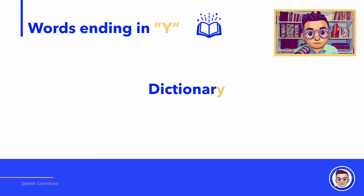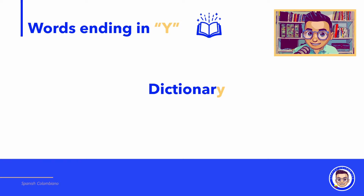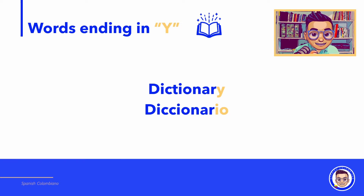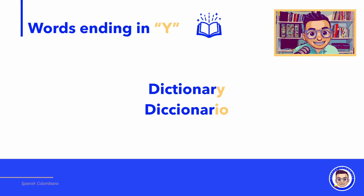What about dictionary? How do you think we say dictionary in Spanish? Diccionario. Here there is another key thing: when in English you have C-T, you change that for double C. So dictionary becomes diccionario.